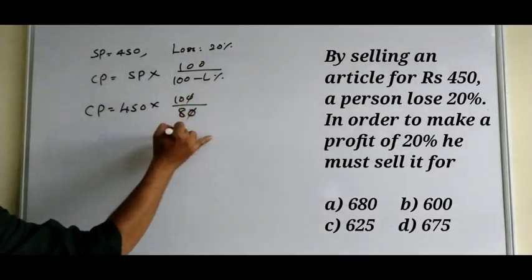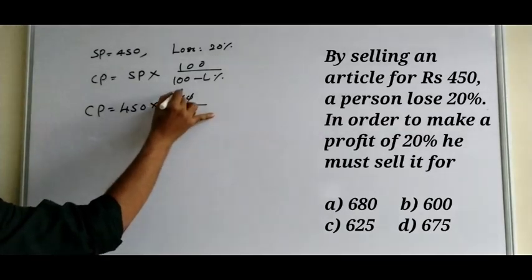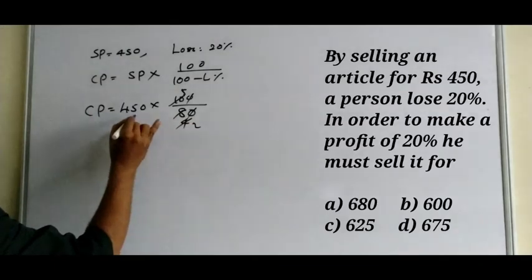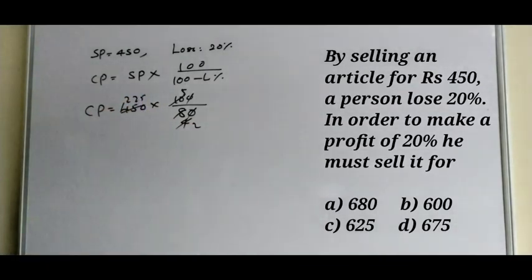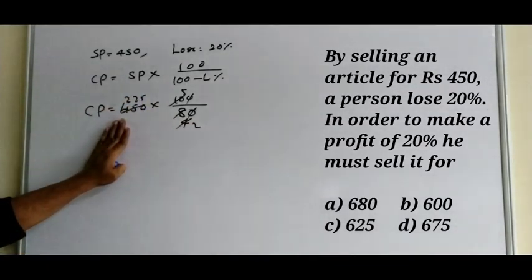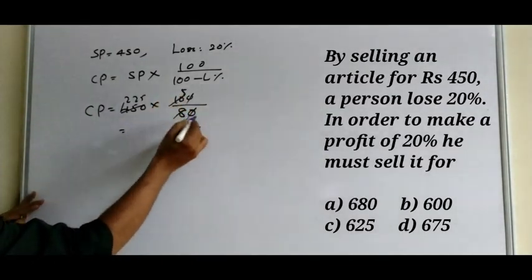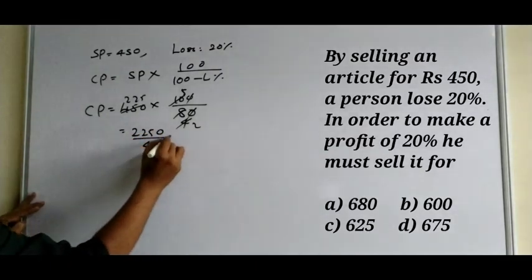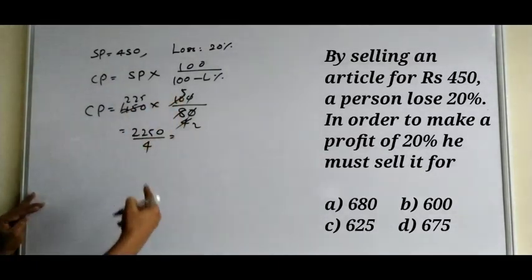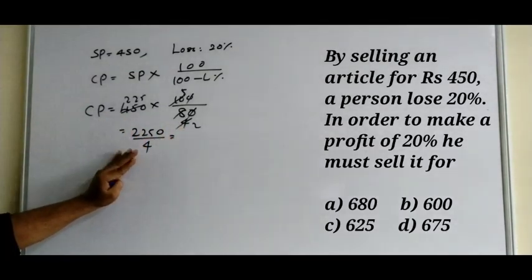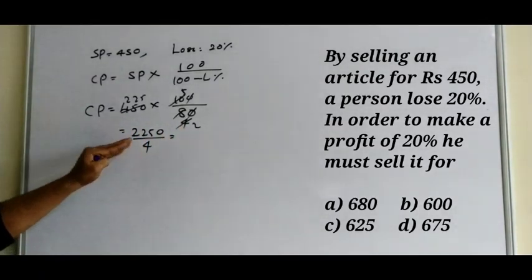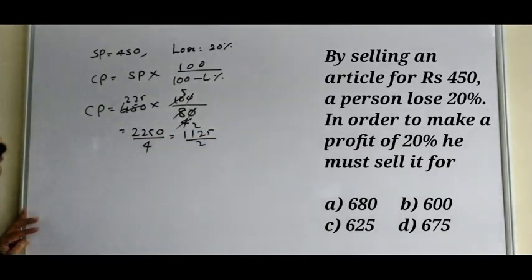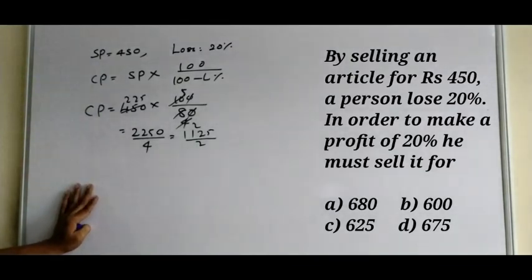We can cut the zeros and simplify: 450 into 100 divided by 80 gives us 2250 divided by 4, which can be further reduced to 1125 divided by 2. So that is the CP.